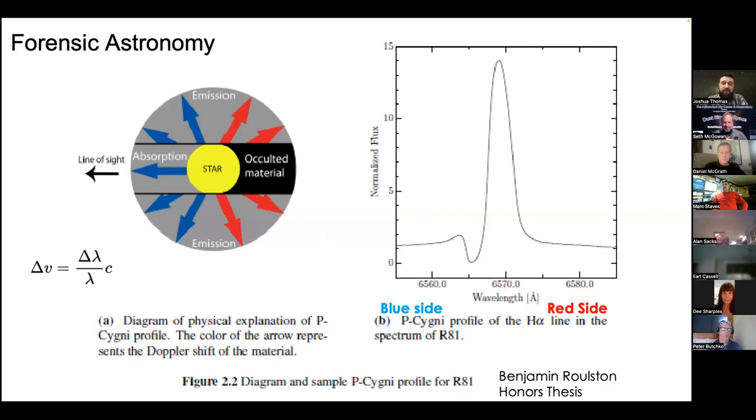In this first scenario, imagine we have a star with a spherically symmetric wind. My face is the star, there's wind coming off in all directions spherically. I've got the picture here on the left. All the arrows point away, indicating the motion of the material. If you have gas in front of your star, the star is hot, you're going to get absorption.